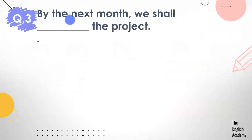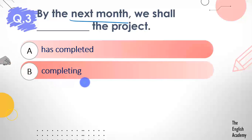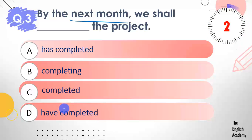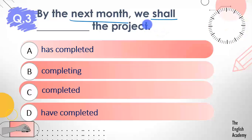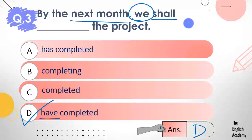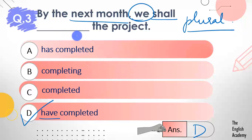Question number 3: By the next month, we shall ___ the project. Options: A) has completed, B) completing, C) completed, D) have completed. Here 'shall' is being used and we are talking about next month. The answer is option D — we shall have completed the project. 'Have' is used because 'we' is plural, and plural subjects take 'have'. The other options do not make sense in this blank.